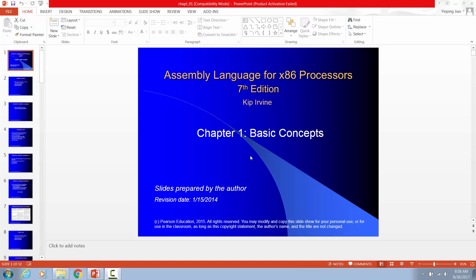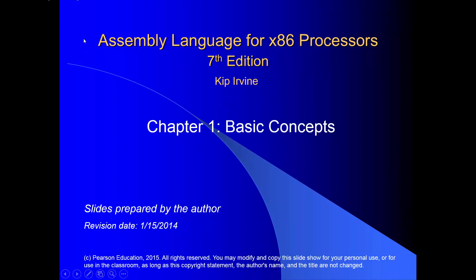Welcome to Computer Science 2425, Chapter 1 Video, Part 1. Our book title is called Assembly Language for x86 Processors. This is for the entire x86 processor families — our textbook is based on these processor families. This is the seventh edition by author Kip Irvin. You're going to see that we will use his library functions to develop assembly language programming.